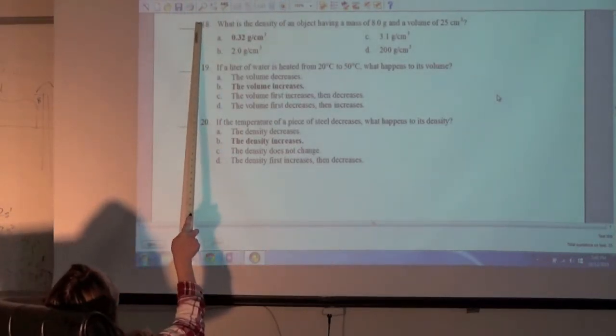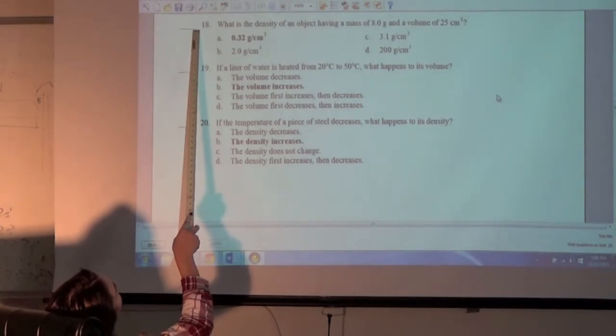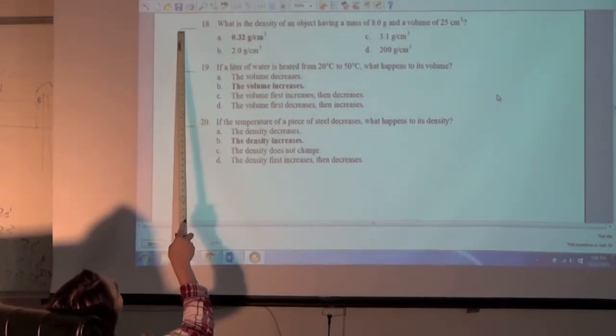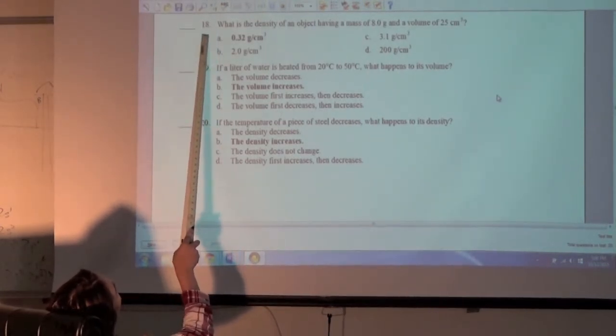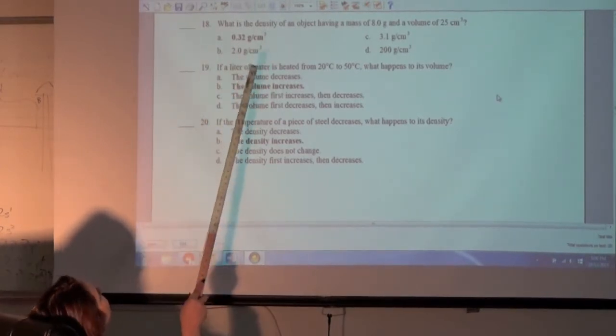What is the density of an object having a mass of 8.0 grams and a volume of 25 centimeters cubed? A, 0.32 grams per centimeter cubed.